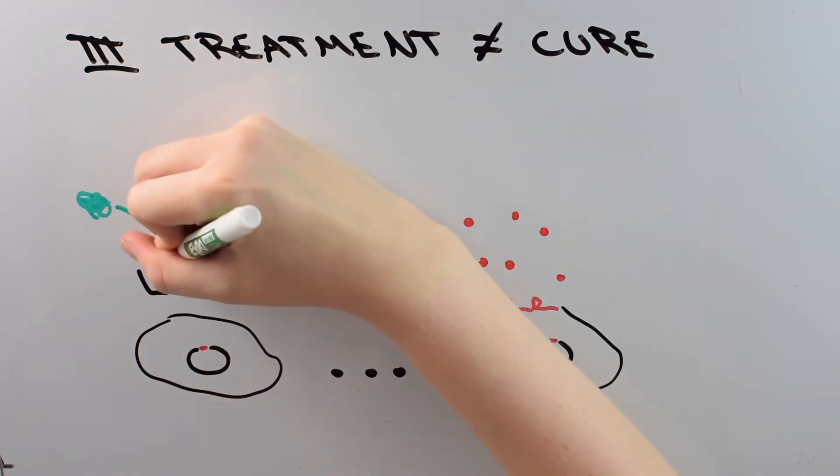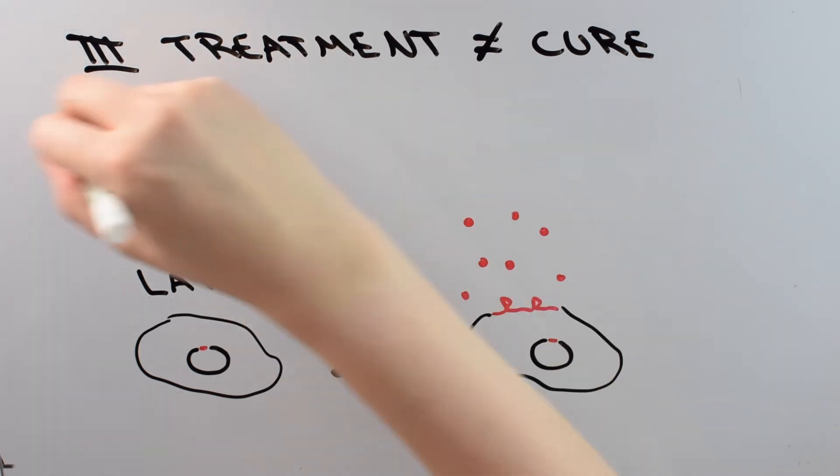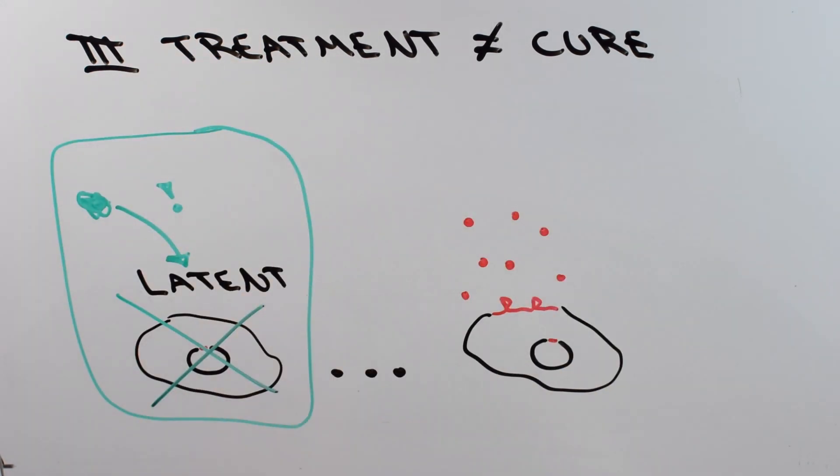So as soon as scientists can find a way to recognize latent cells and shut them down before they ever become active again, that's when we'll have a cure for HIV.